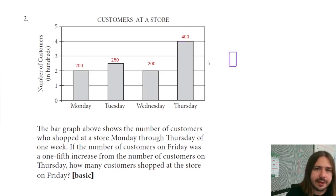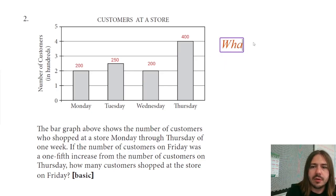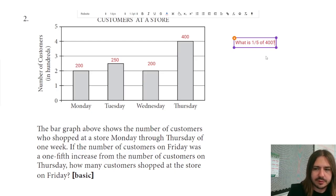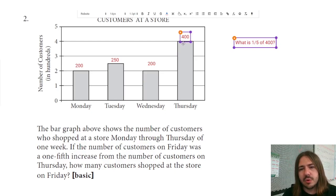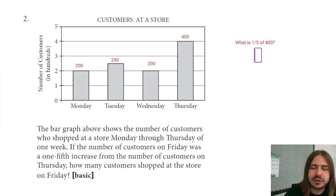So on Friday we have a one-fifth increase. First, let's figure out what is one fifth of 400. And since there's a one-fifth increase, what we'll do is add that number to 400 and we'll get our answer. To figure out what's one fifth of 400, we're just going to multiply one fifth times 400.